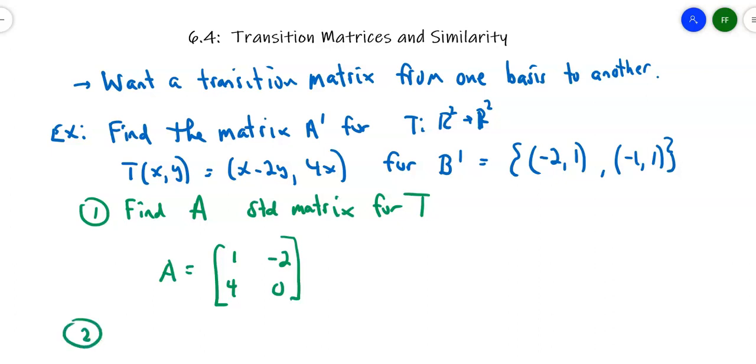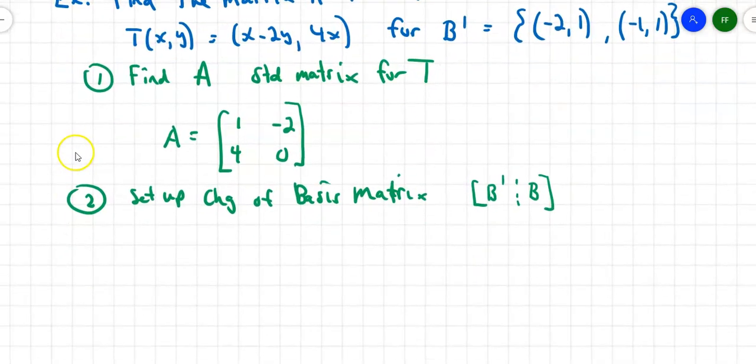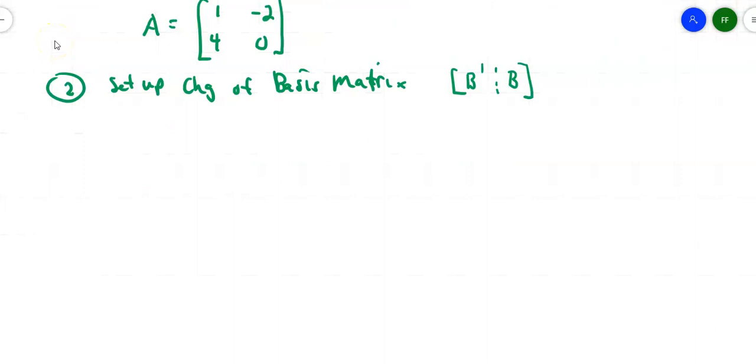The second thing is I want to set up a change of basis matrix. Remember how we do that? This goes back to Chapter 4, where you set up the new basis, the old basis, and then you row reduce until you get the identity matrix on one side and the transformation matrix on the other side. The new basis B' was given as (-2, 1), so that first vector goes down the first column, and then (-1, 1) goes down the second column.